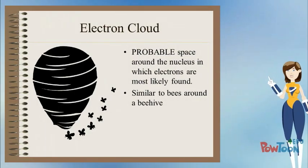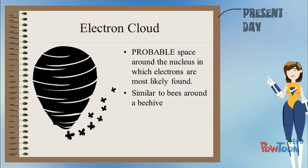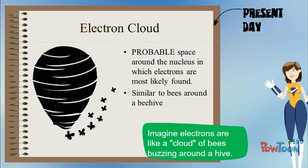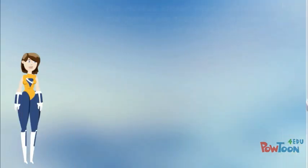An electron cloud is the probable space around the nucleus in which electrons are most likely found, similar to bees around a beehive. Imagine electrons are like a cloud of bees buzzing around a hive.